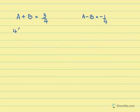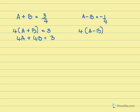Now let me cross multiply. So from equation 1, I get 4a plus 4b equals 3. Cross multiplying equation 2 gives a minus b equal to minus 1, which is 4a minus 4b equals minus 1. I'll put these as equation 3 and equation 4.